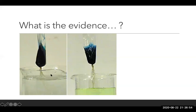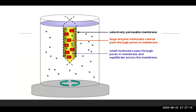In the lab procedure, we also test the water for the presence of glucose or protein using different reagents, and we test the solution in the bag to see if anything diffused out of it. Dialysis tubing is a selectively permeable membrane — anything large cannot pass through the pores, but small molecules can.